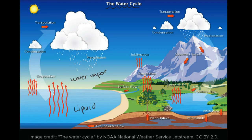That water vapor is going to rise, likely with air that has been heated on the surface due to the sun, along with other more complex dynamics. As it rises and the overall temperature cools, that water vapor will condense into little droplets. It condenses around tiny air particles — little particles of dust that you can't even see with your eye.